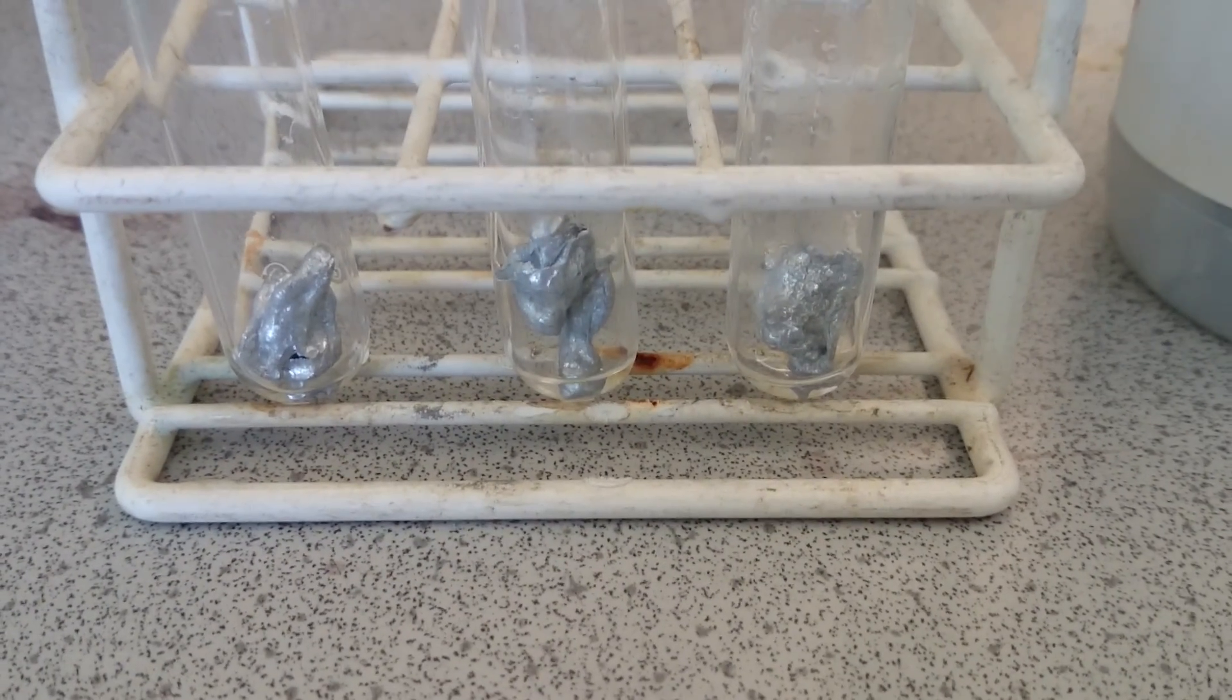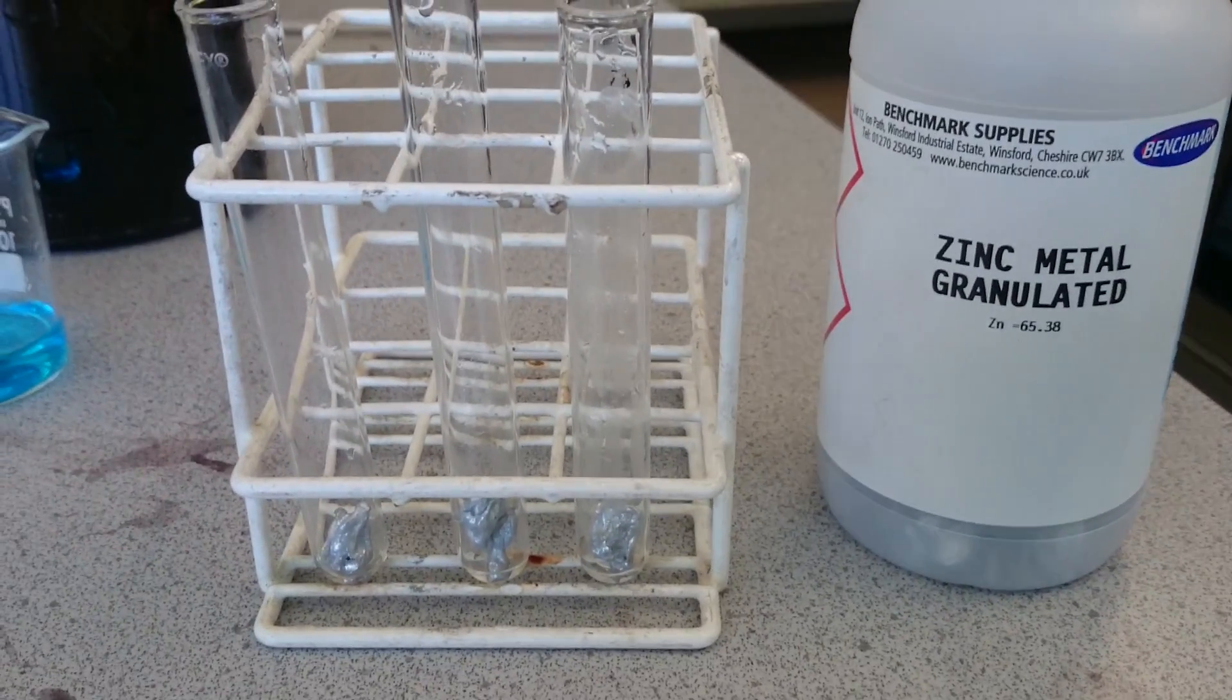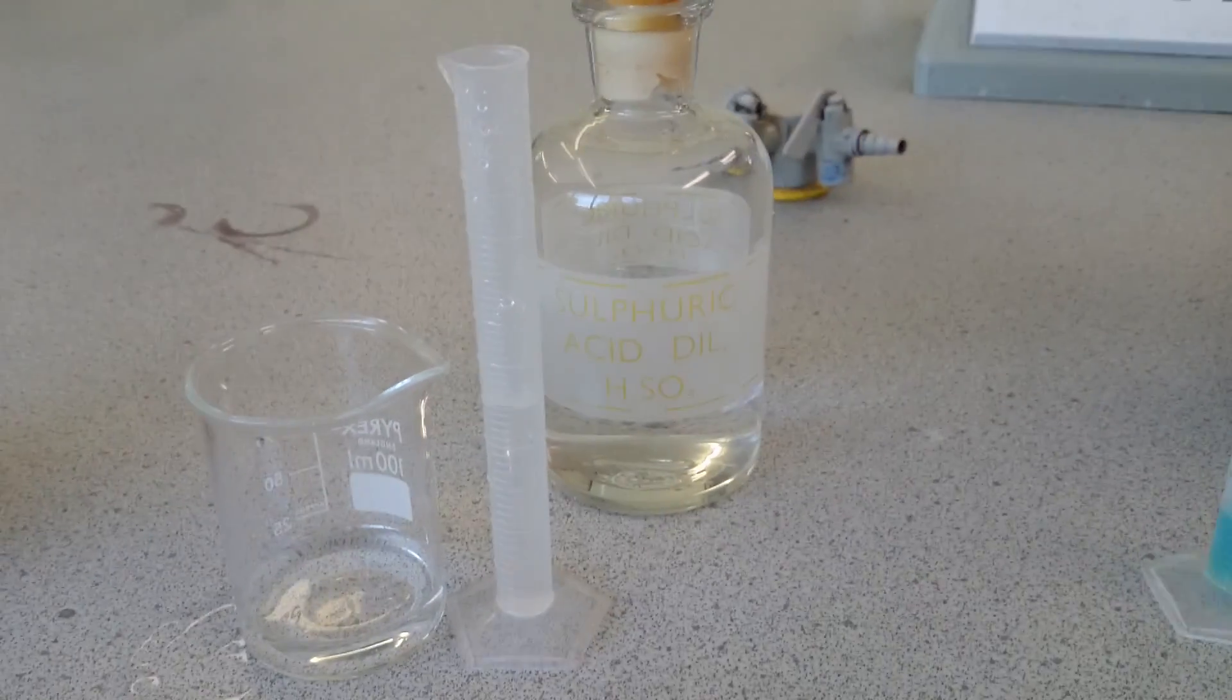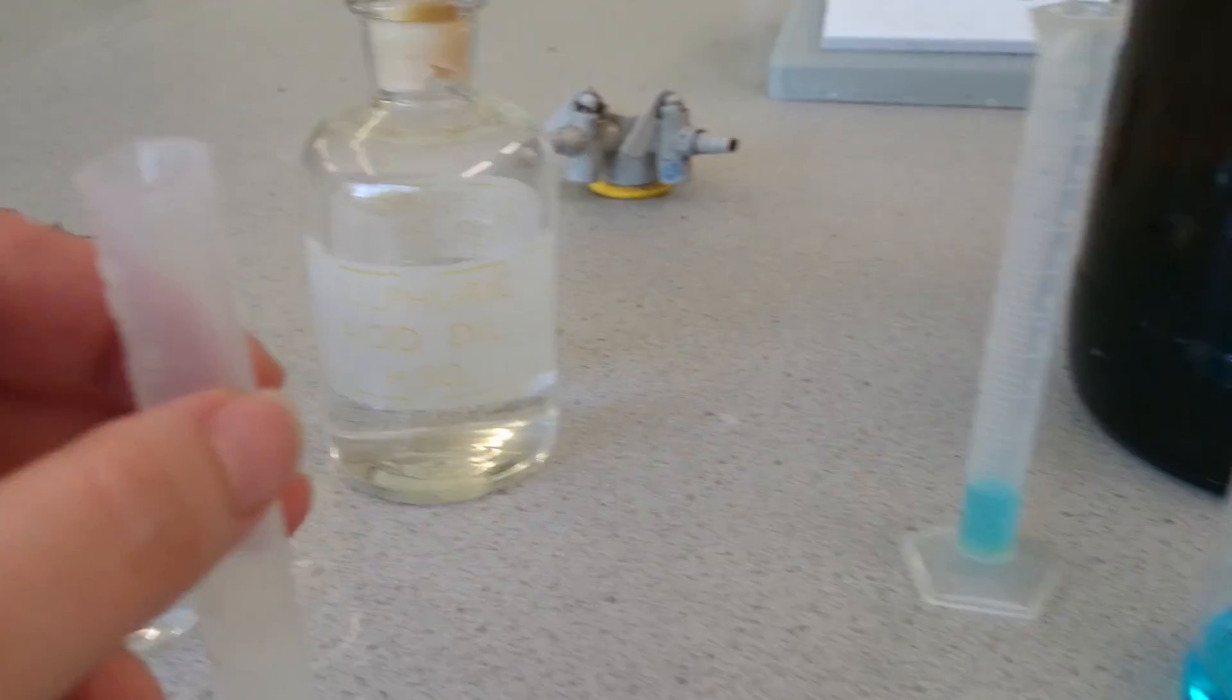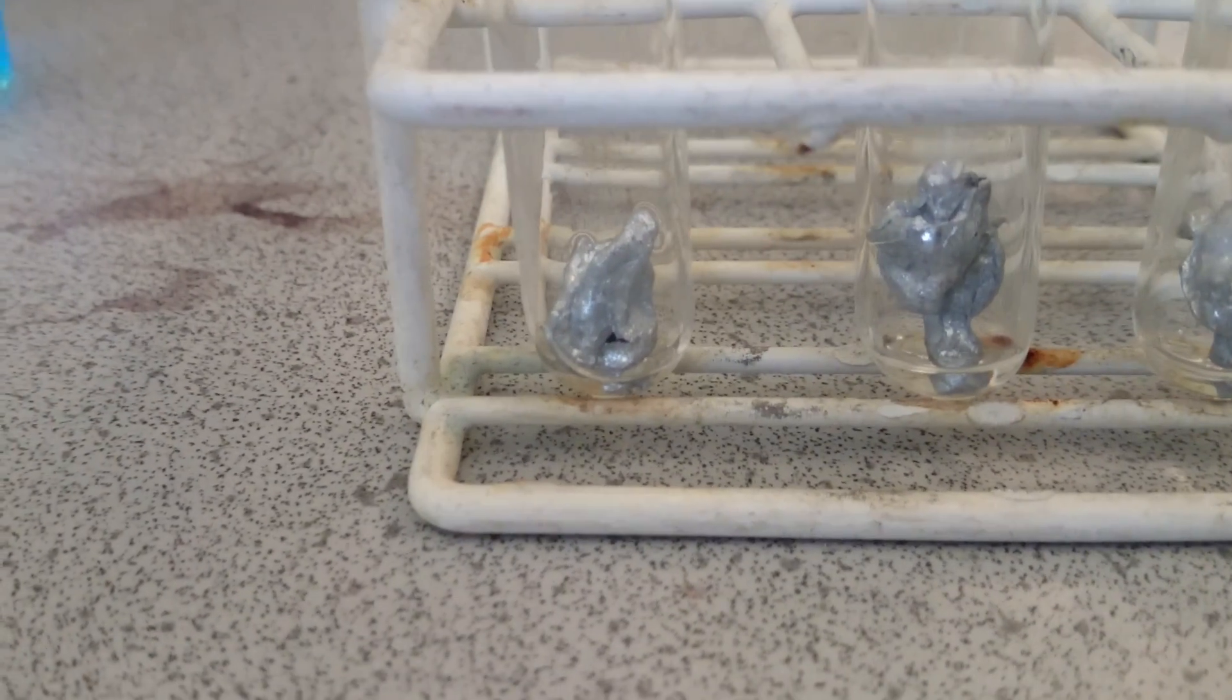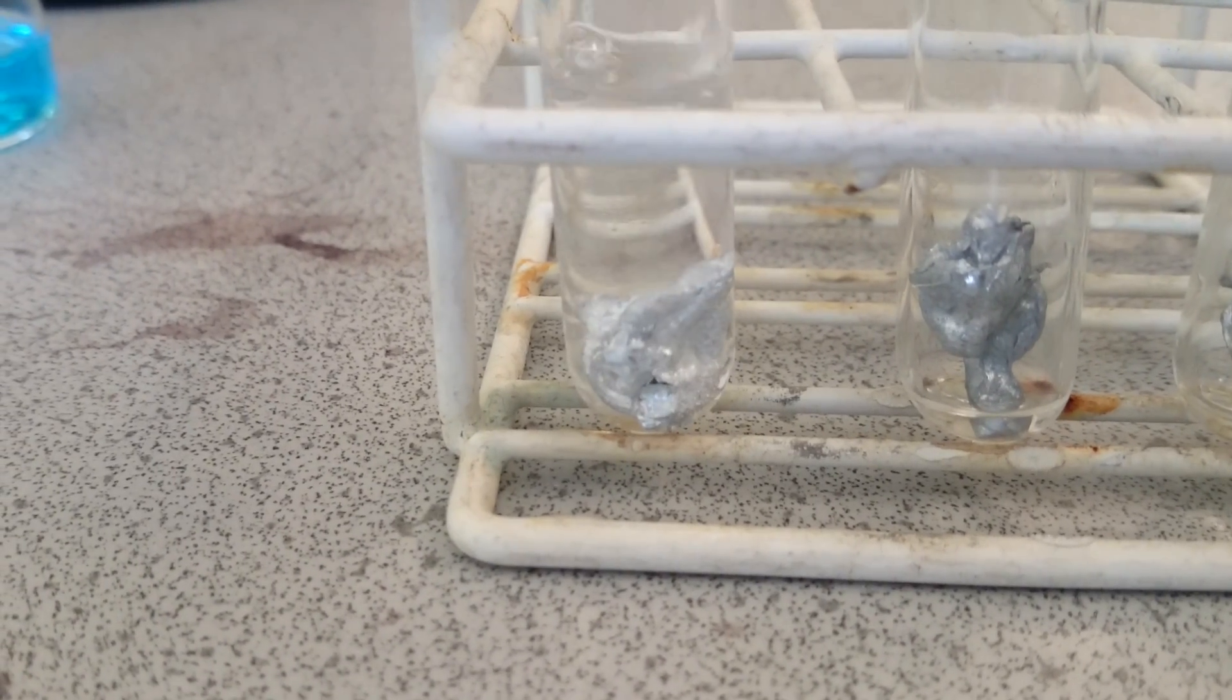We've got some granulated zinc here and we're going to look at the reaction of zinc with dilute sulfuric acid, which I have here at a concentration of one mole per decimetre cubed. In the first test tube, I'm going to add five centimetres cubed of dilute sulfuric acid and observe any changes.